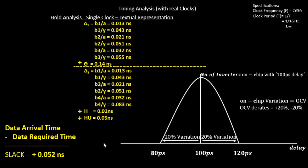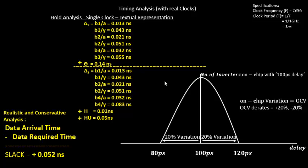As discussed in previous videos, we have four options: either path can be delayed or sped up by 20%, or both can be delayed or increased by 20%. Let's now focus on the realistic and conservative analysis.